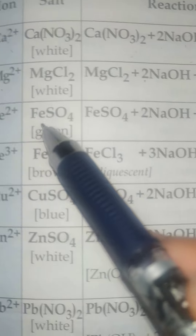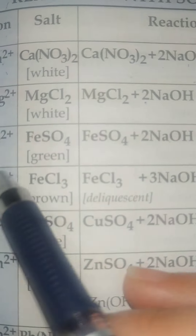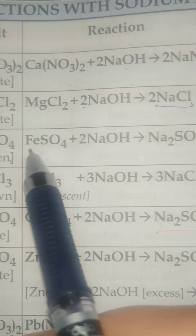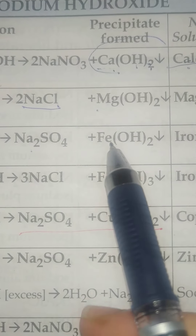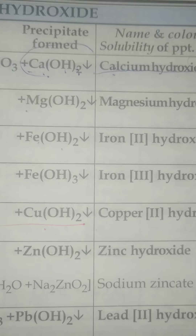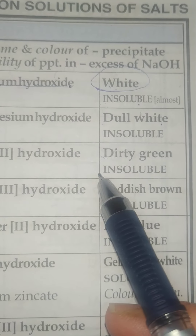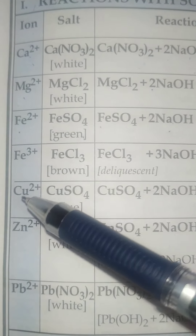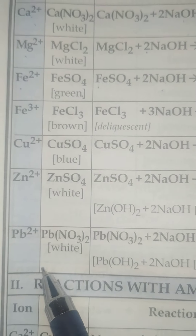The next is iron. The salt is FeSO4, which is green in color. When this salt reacts with sodium hydroxide, it forms Na2SO4 and a precipitate of iron hydroxide. This precipitate is dirty green in color and is insoluble in nature. Other salts and their reactions with sodium hydroxide are also given — just go through those examples.